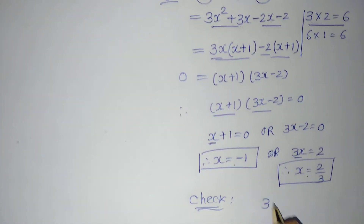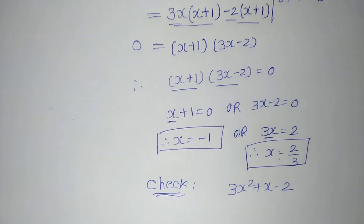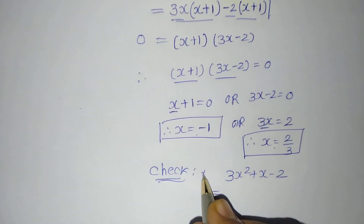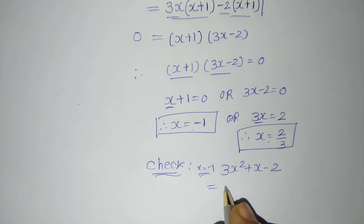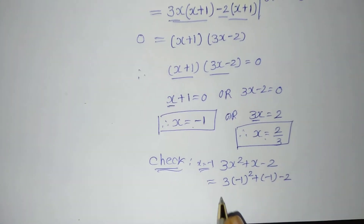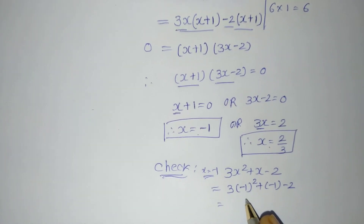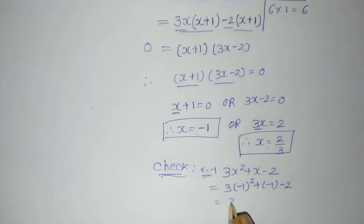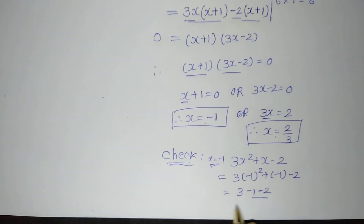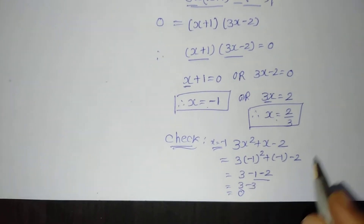The polynomial is 3x² + x − 2. This is the end of the method, but we will cross-check whether these values are correct. Let us substitute the first value x = −1: 3(−1)² + (−1) − 2. Since (−1)² = 1, this gives 3(1) − 1 − 2 = 3 − 3 = 0. So the first value is verified correct.